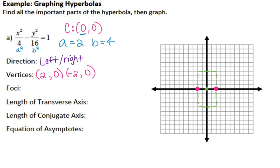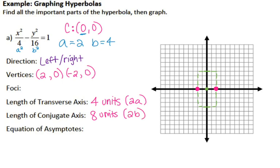Before we draw the asymptotes, let's find the length of the transverse axis and the conjugate axis. The transverse axis is the distance between your vertices, so that distance was 4 units. The conjugate axis is the width of the box — in this case it was 8 units. So the transverse axis is 2 times A, similar to your major axis for ellipses, and the conjugate axis is 2 times B, similar to your minor axis.